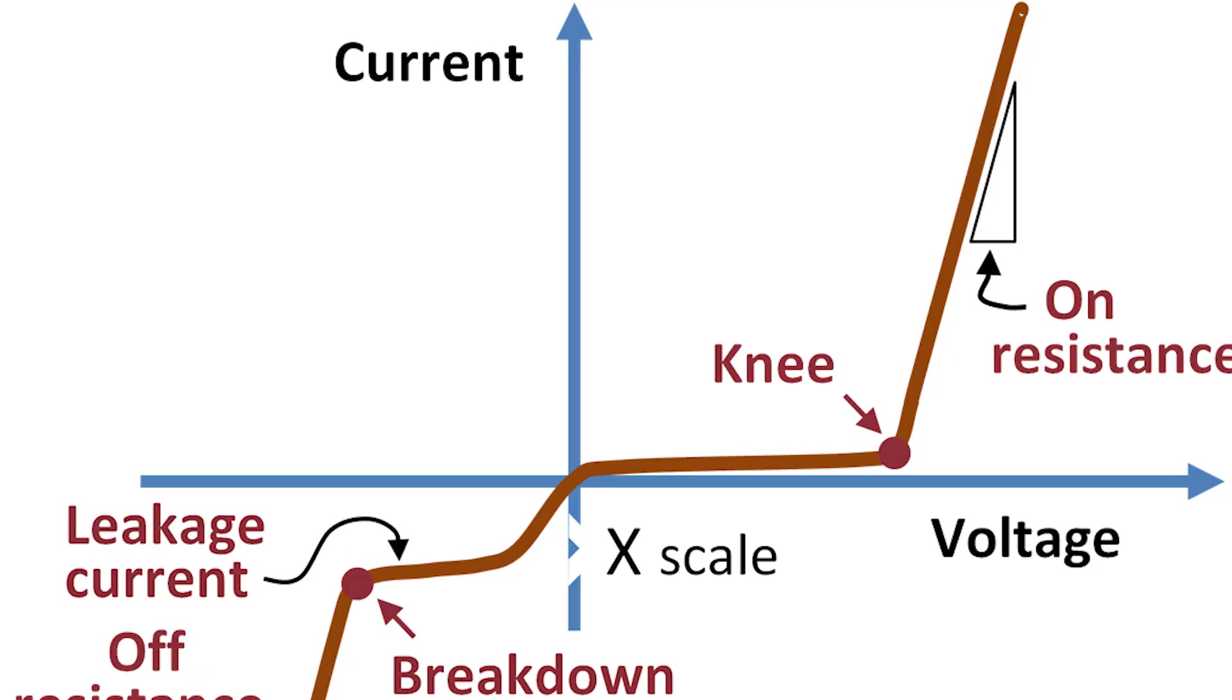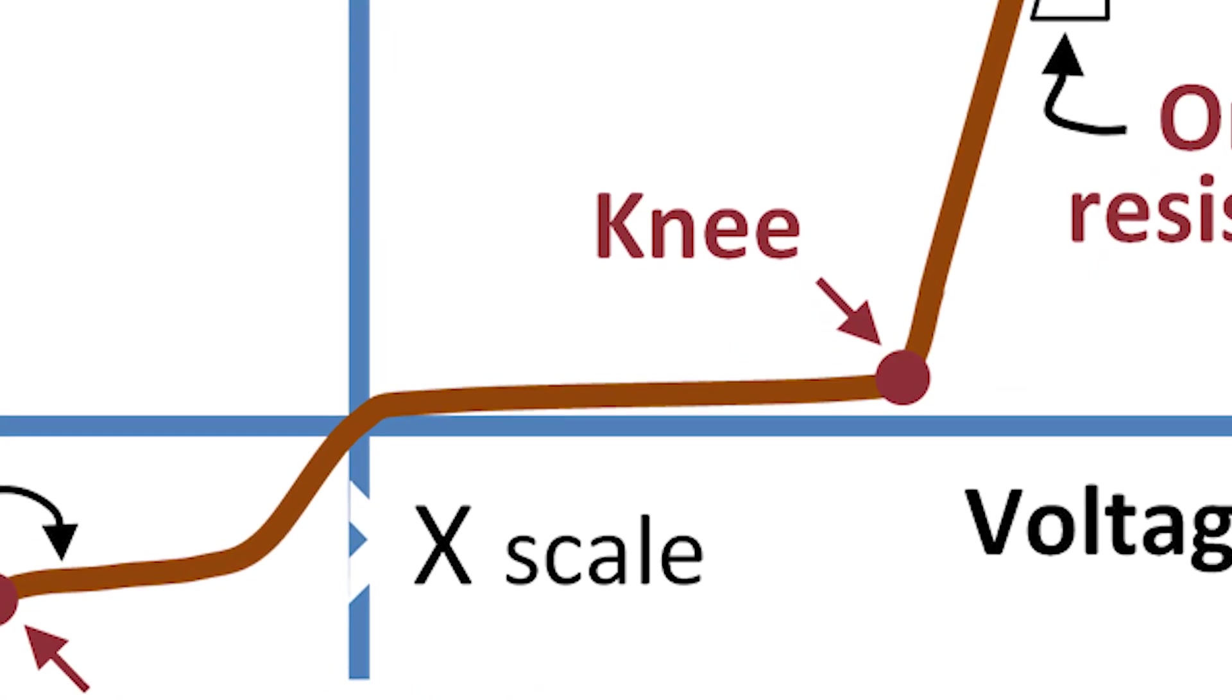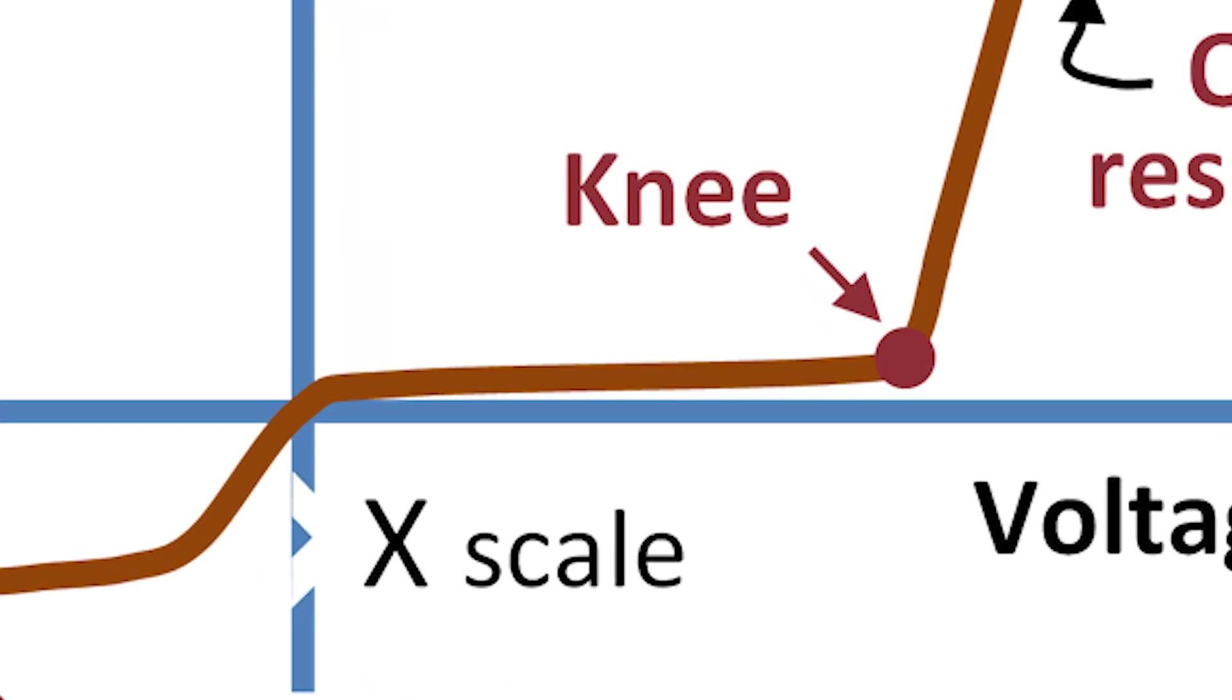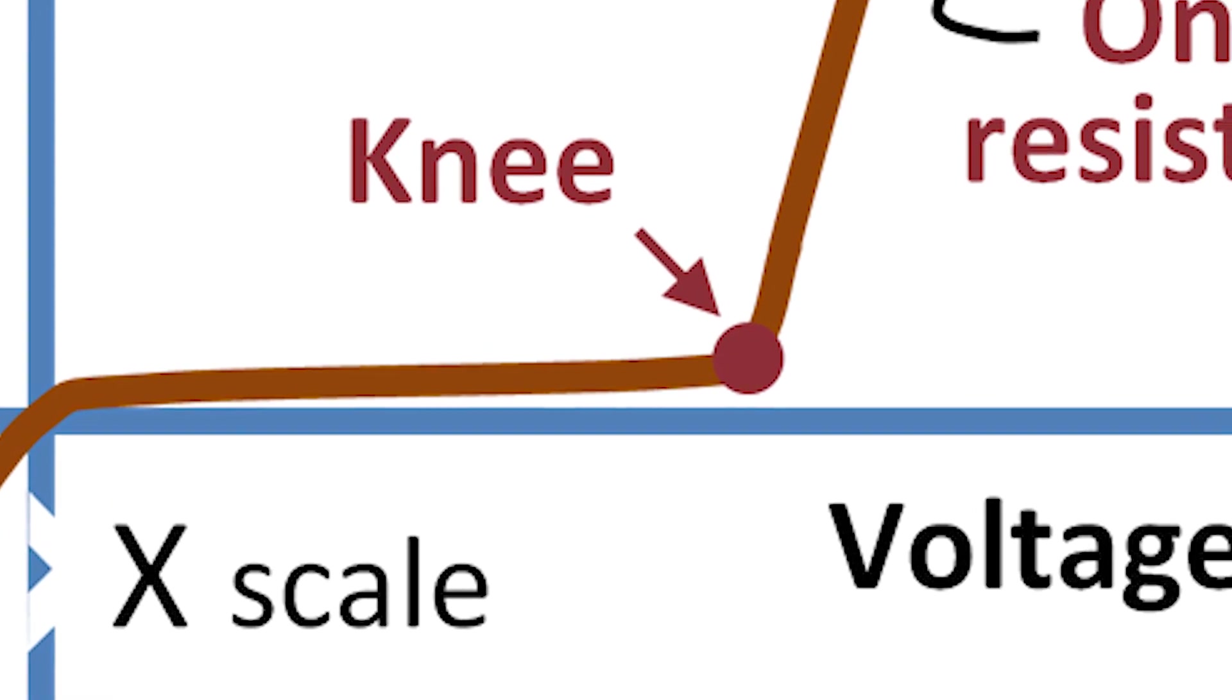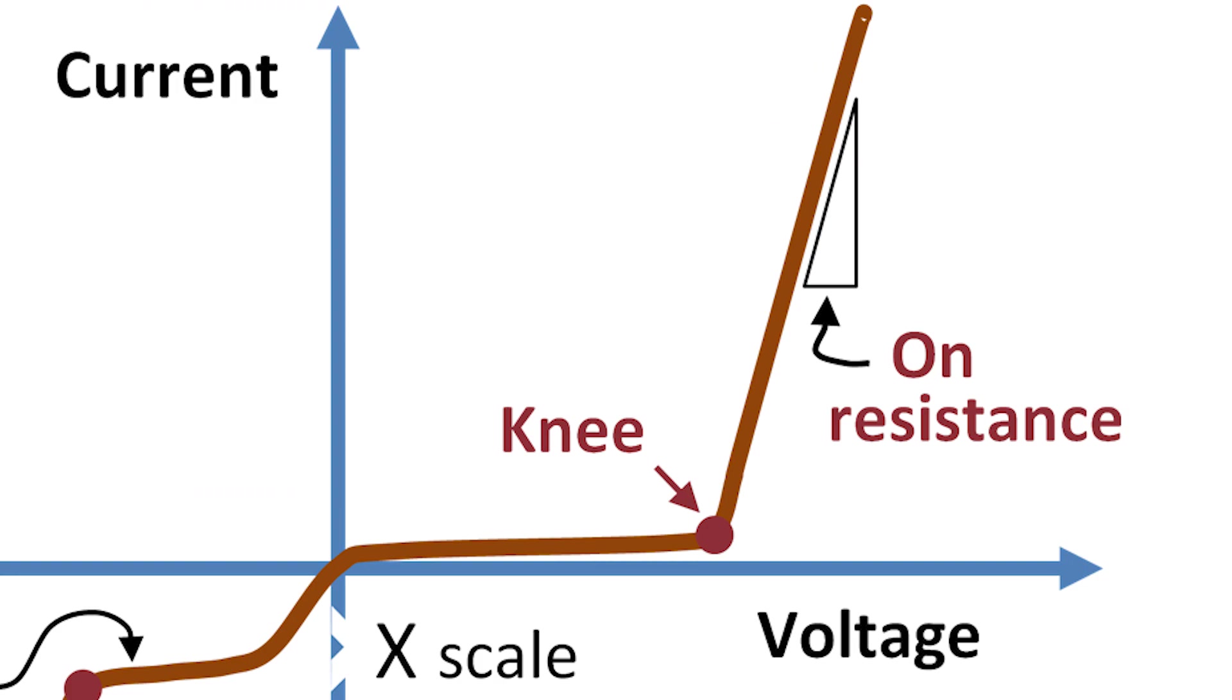If a diode is not exceeding 0.7 volts for silicon, it's not in the on state. And if a diode is not in the on state, the resistance of that diode is reasonably high. When the diode forward bias voltage passes the threshold, current will flow. For silicon diodes, usually 0.7 volts is that threshold.